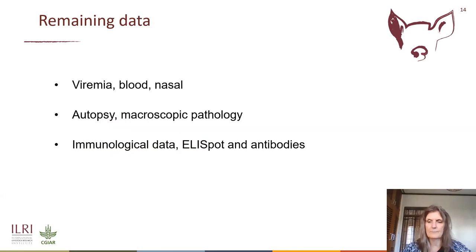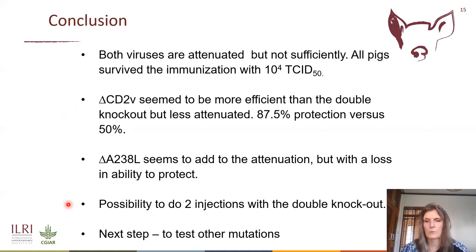In conclusion, both viruses are attenuated but not sufficiently. All pigs survived the immunization with 10⁴ CCID50. The CD2V knockout was more efficient but less attenuated, giving 87.5% protection versus 50% with the double knockout. The A238L knockout seems to add to attenuation but with a loss in ability to protect. A possibility would be two injections with the double knockout at a lower dose, but that would be pushing boundaries. So the next step is to test other mutations.